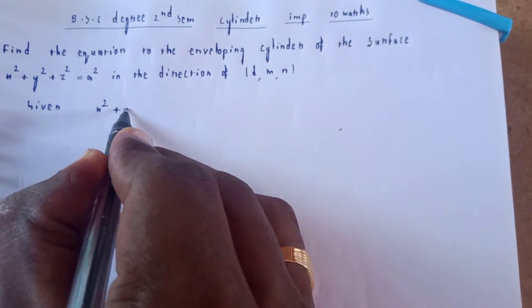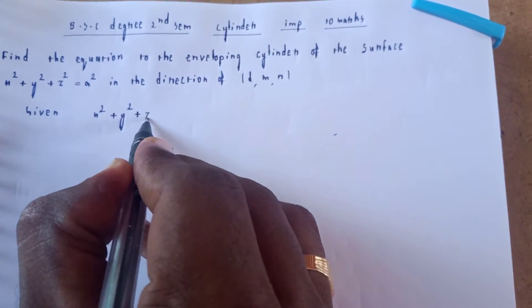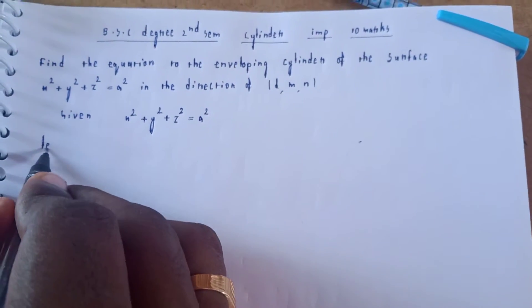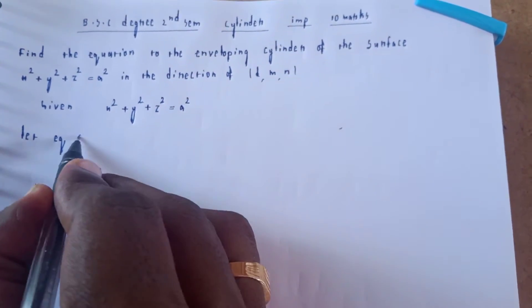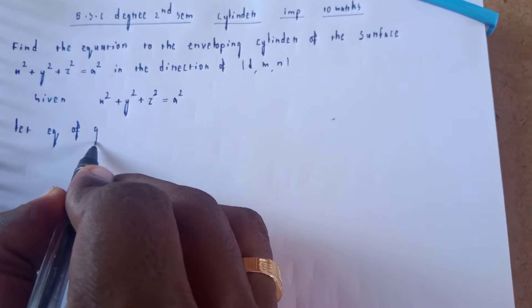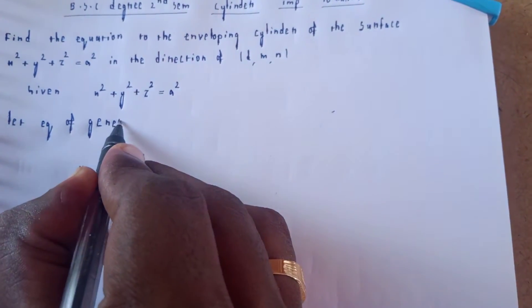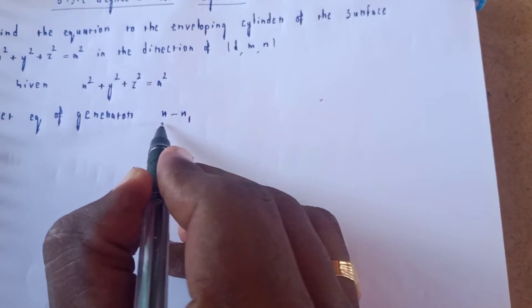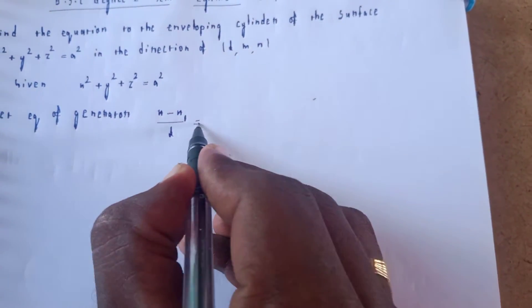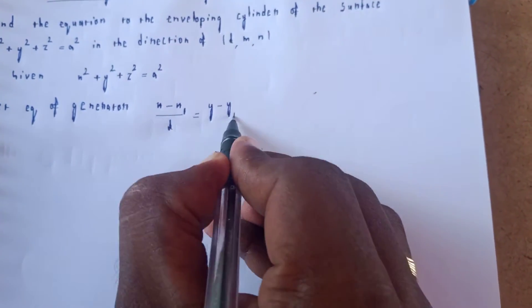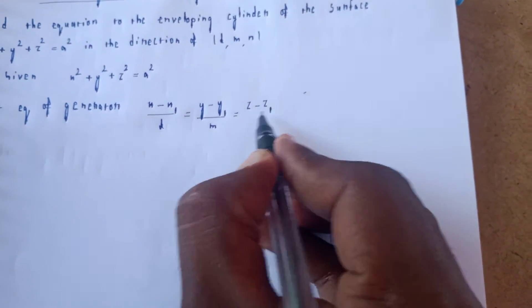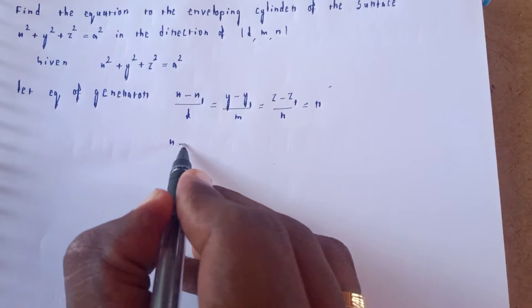Given: x² + y² + z² = a². Let the equation of the generator be: x minus x1 by L is equal to y minus y1 by M is equal to z minus z1 by N is equal to R. From these three equal expressions, we get x, y, z.